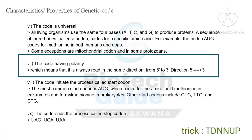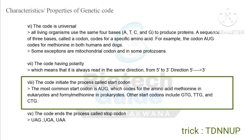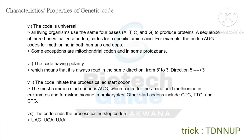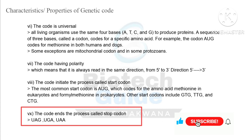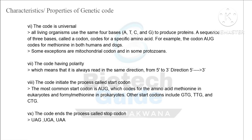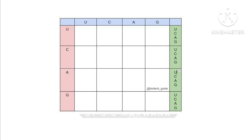Sixth, the code has polarity — it is always read in the same direction from 5-prime to 3-prime. Seventh, the code initiates the process via a start codon; the most common start codon is AUG, which codes for methionine in eukaryotes and formyl-methionine in prokaryotes. Other start codons include GTG, TTG and CTG. Finally, the code ends the process via a stop codon — UAG, UGA and UAA.